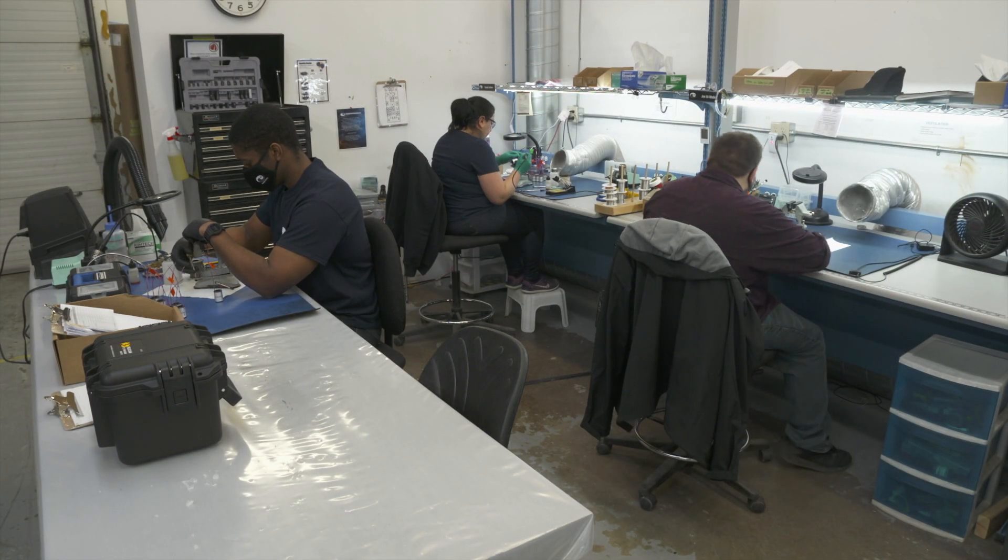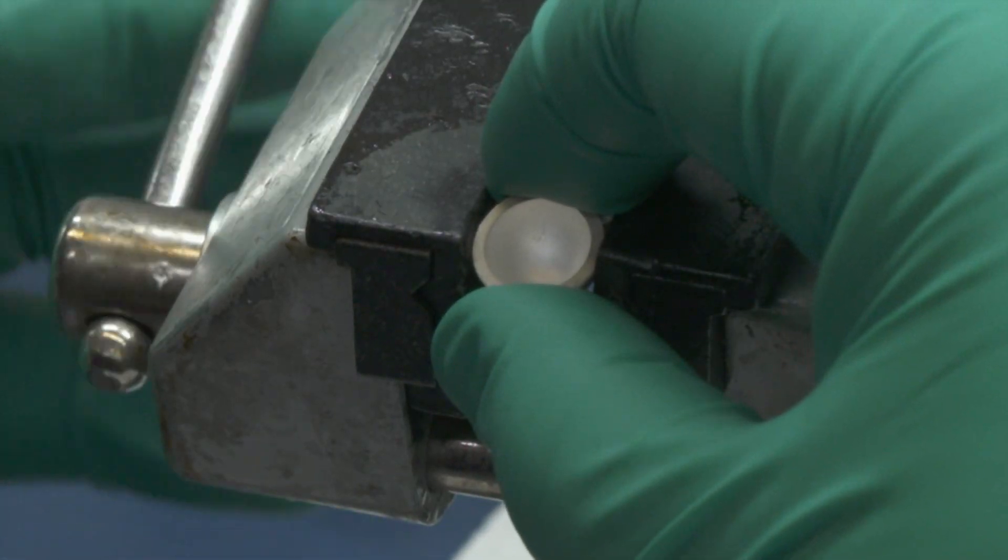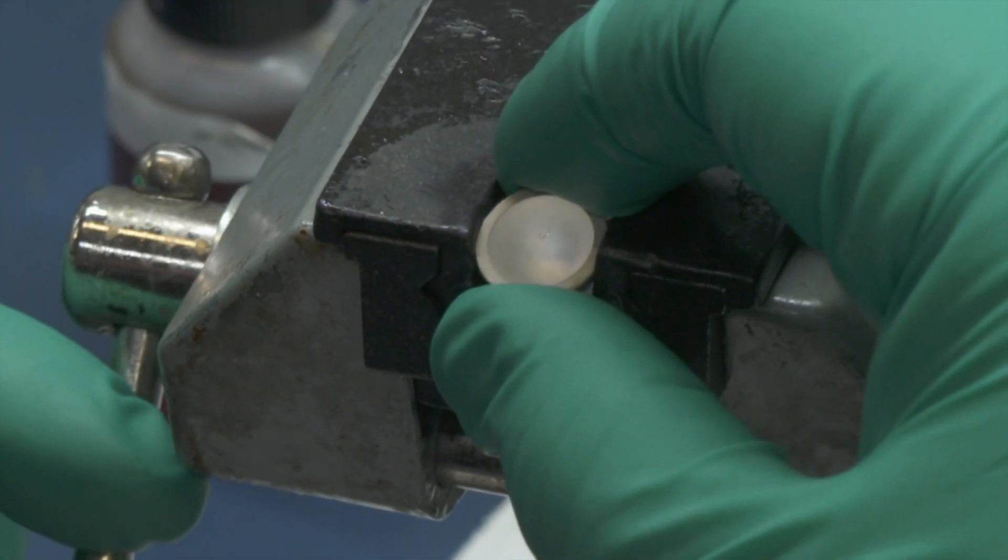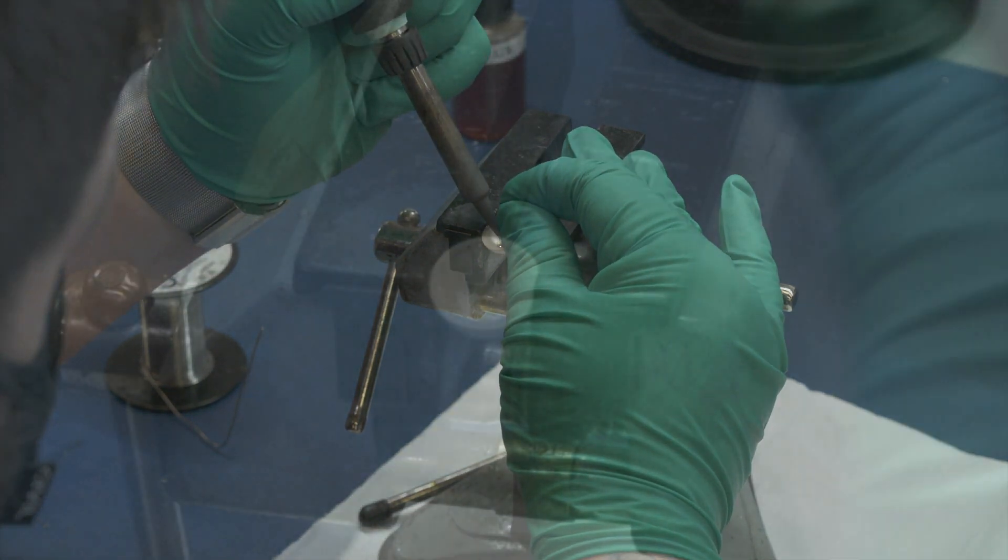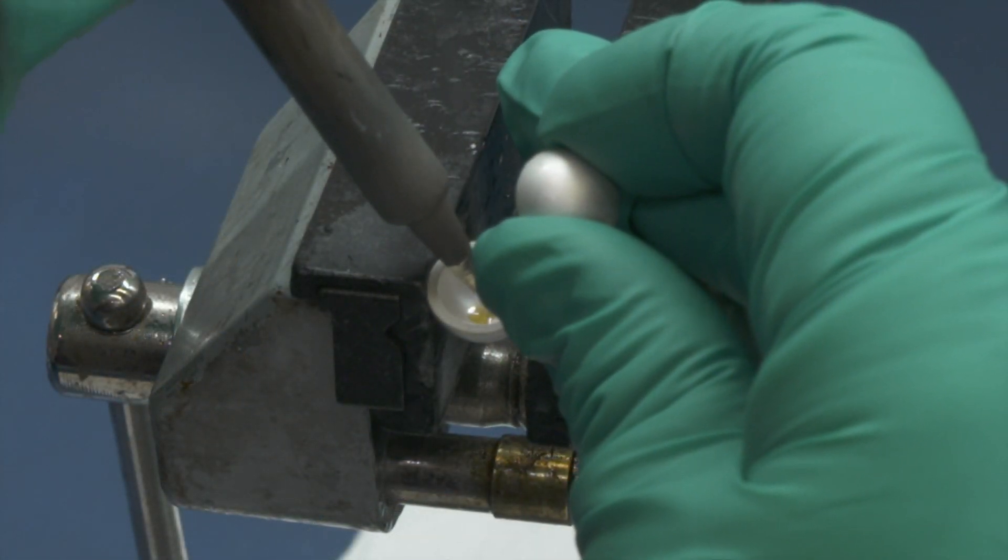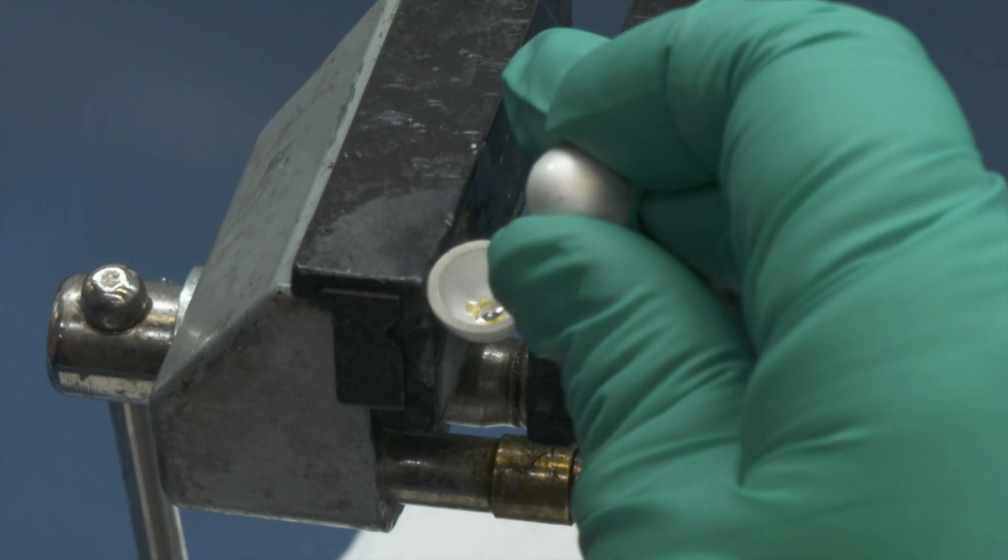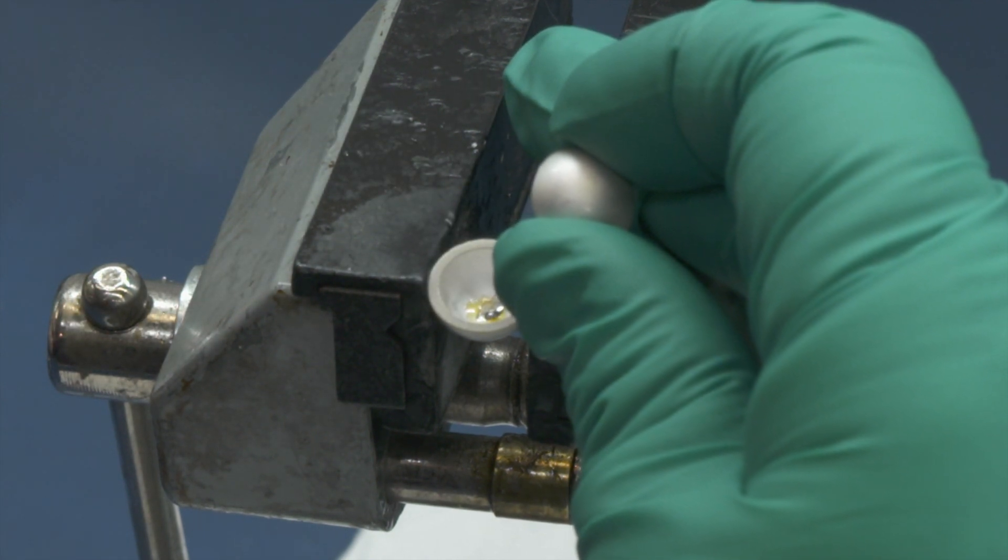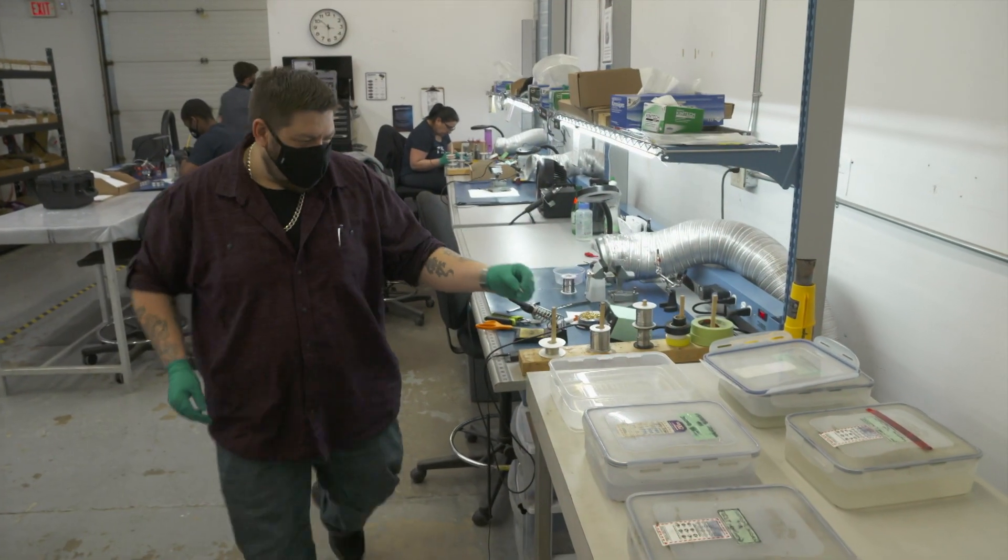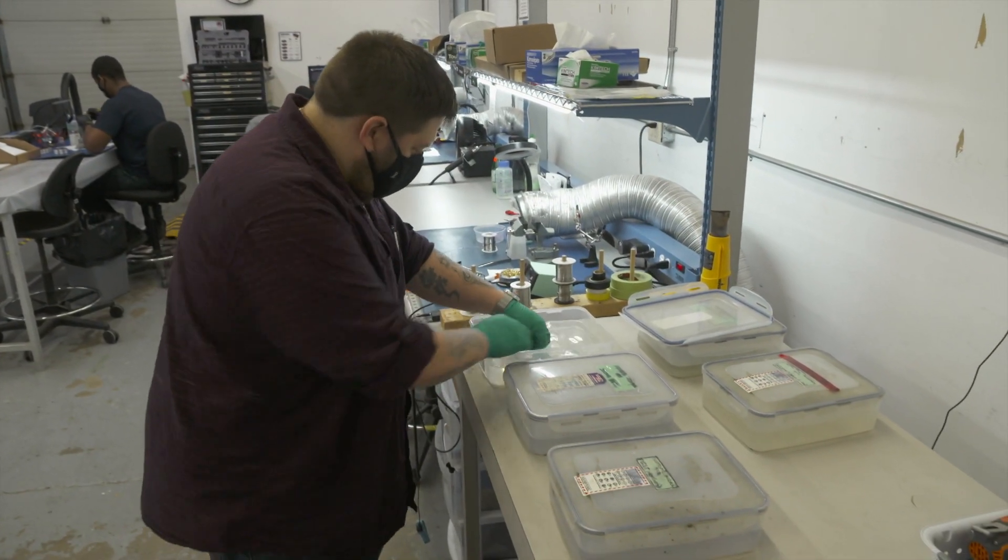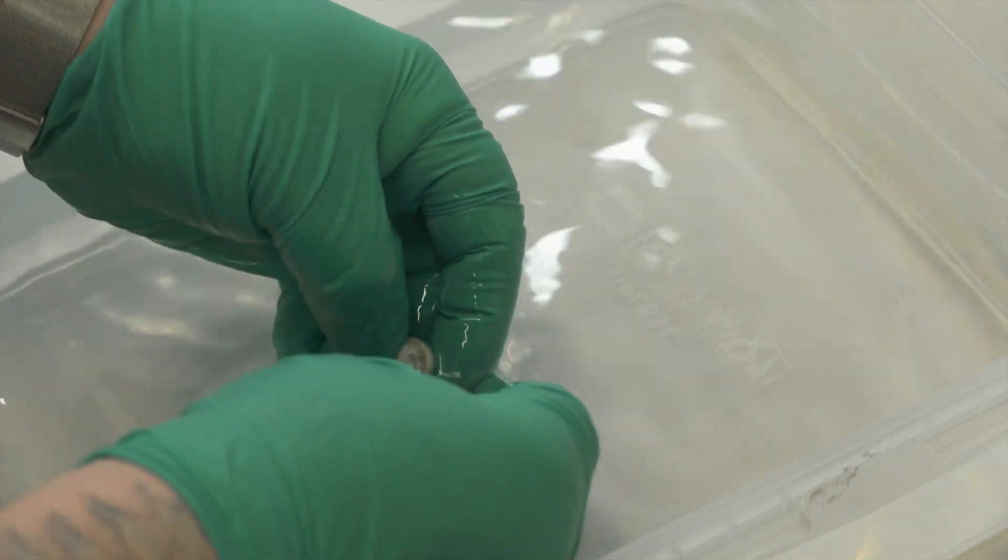To begin making a hydrophone, a technician secures a ceramic hemisphere in a vice. A wire is soldered first to one hemisphere and then to the other to connect the two. This is the ceramic sensing element of the hydrophone. The ceramic assembly is placed into a three-stage alcohol bath to remove any contamination. Then it's dried.